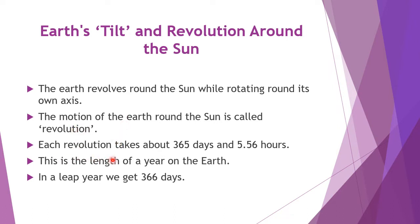Earth's revolution takes about 365 days and 5.556 hours — approximately 6 hours. That means it takes 365 days and 6 hours.